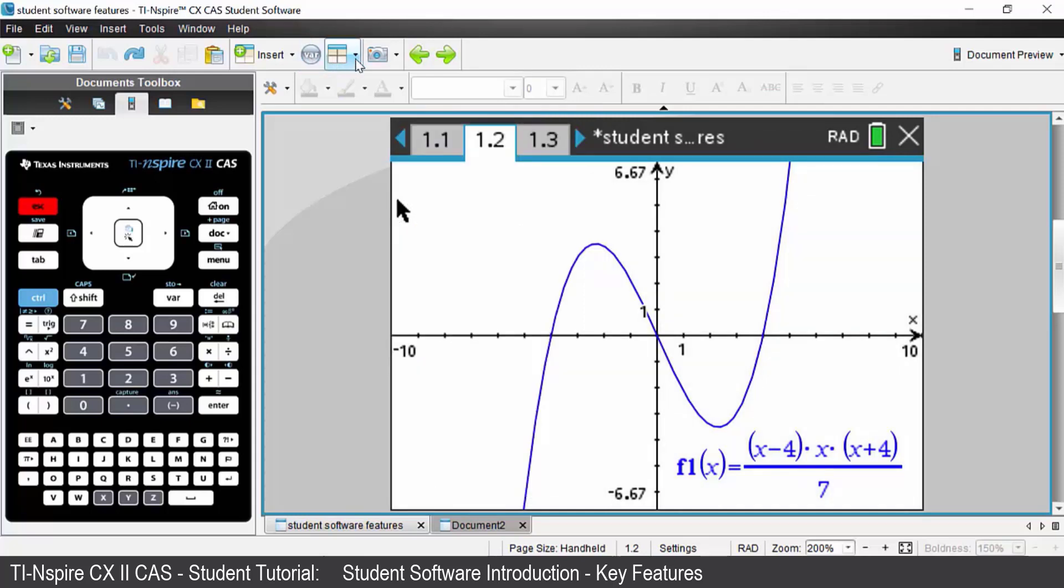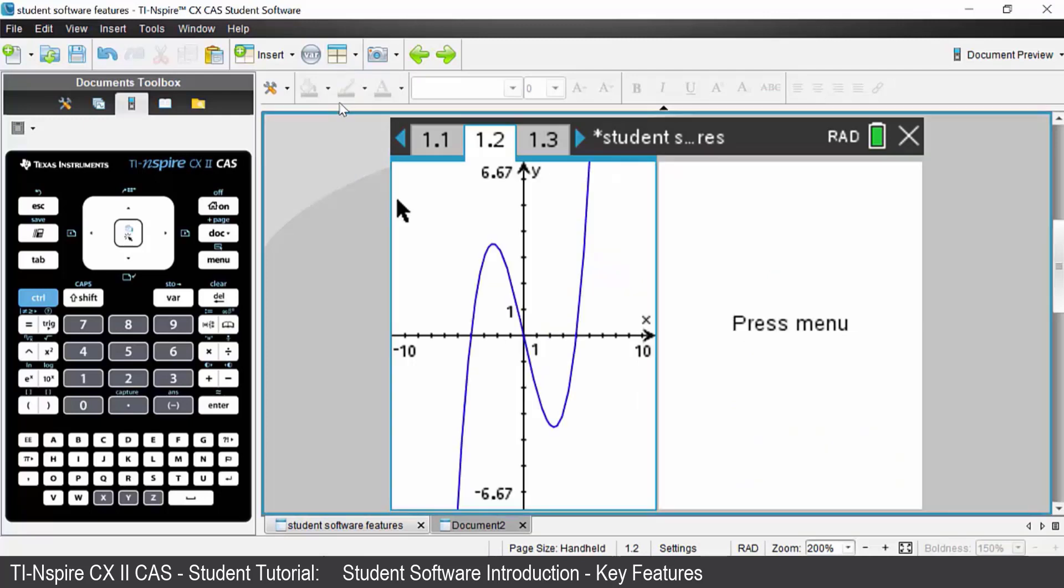The next icon will change the page layout for you. So if we click on that and choose, say for instance the first one, we can split our page into two and have two different applications opened on the same page. Once again I can undo.